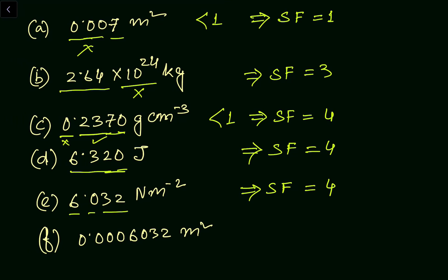In the sixth part, there are four zeros and the whole value is less than one. When a measurement is less than one, all the zeros on the left-hand side of the first non-zero digit are not significant. Those zeros are not significant. The digits 6, 3, and 2 are significant, and the zero in between two non-zero digits is also significant. So total significant figures equals four.